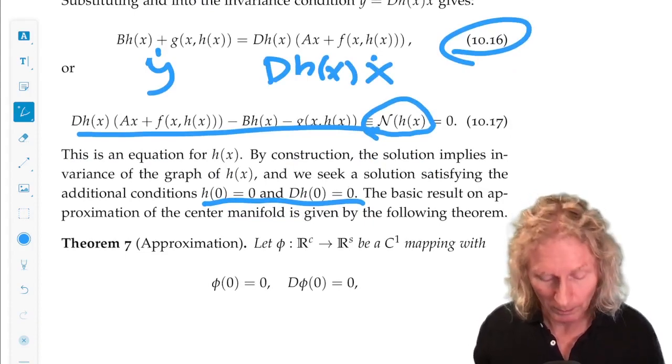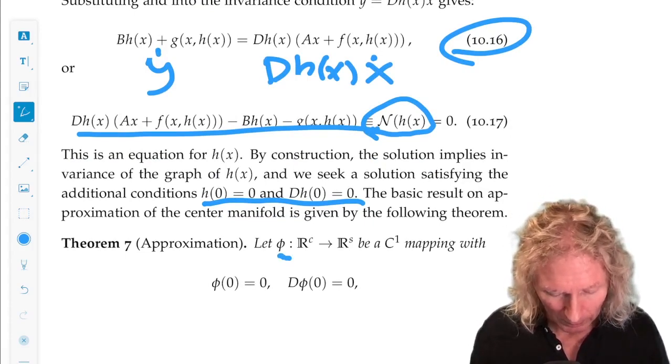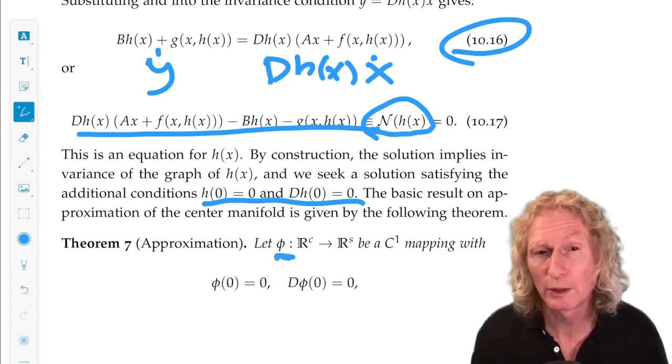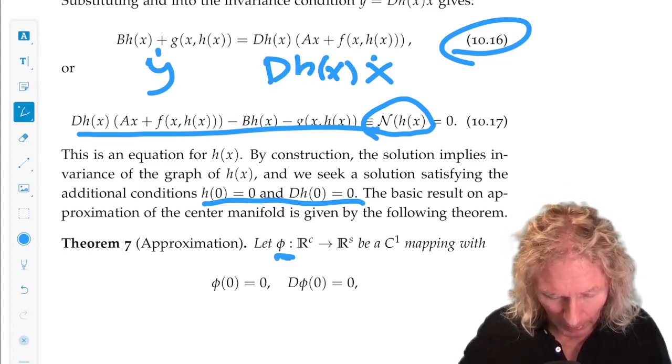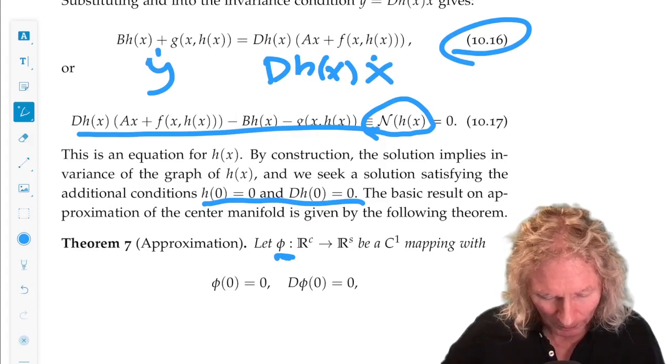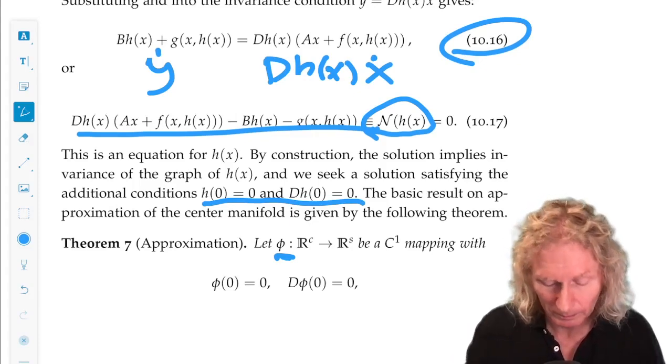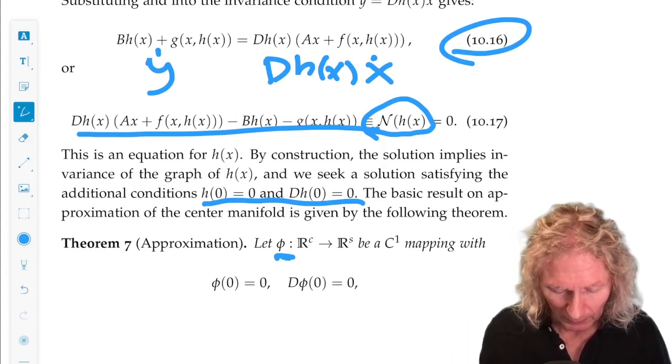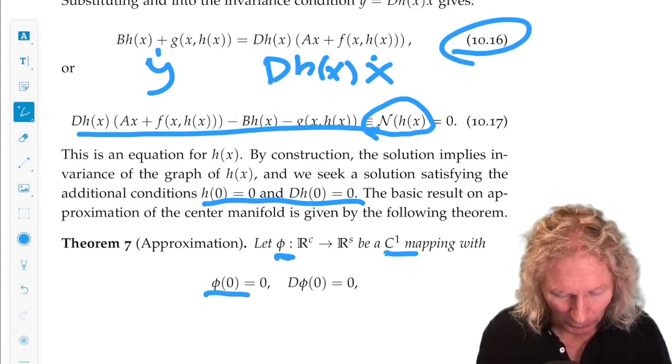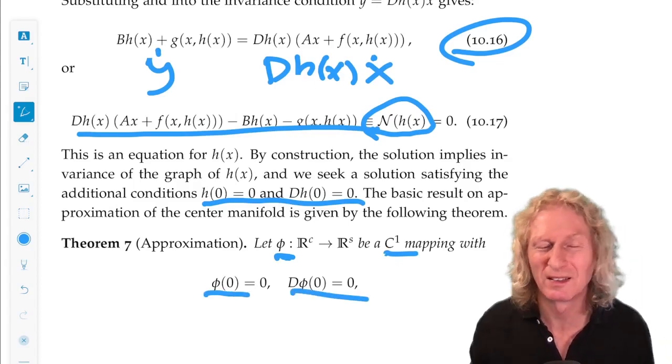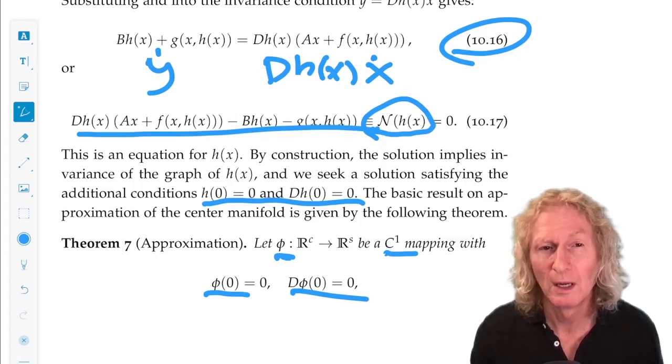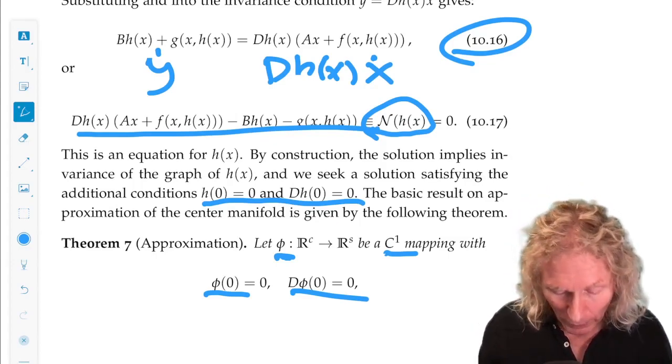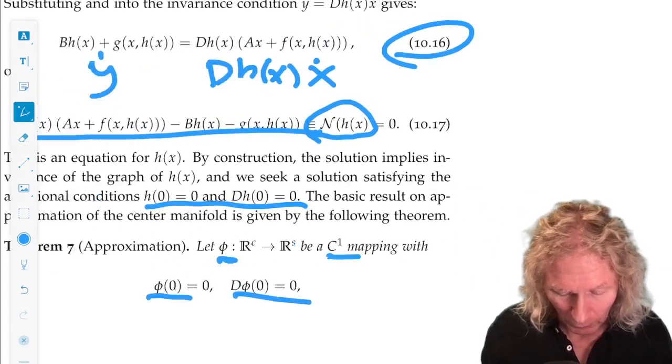Now, the approximation theorem. Suppose we have a general function that's a function of x, maps x into R^c into R^s, at least C^1, so that it passes through the origin tangent to the origin. I mean, those are geometric conditions, these are just conditions on the function. So, if we find a function with these two properties that approximately satisfies this equation, embodying tangency, locally,